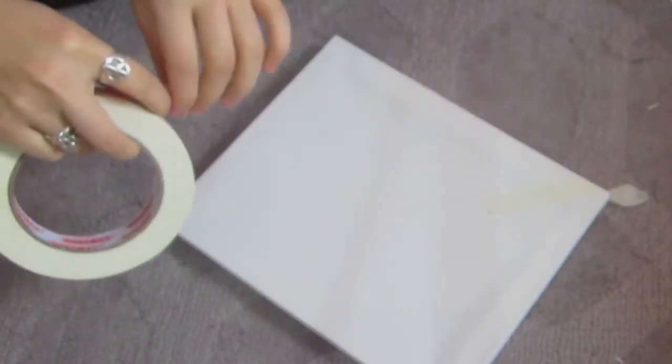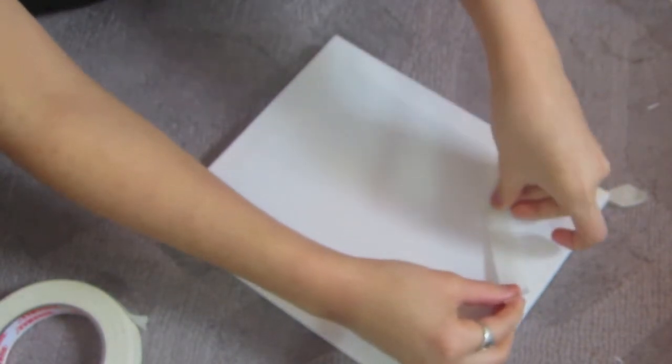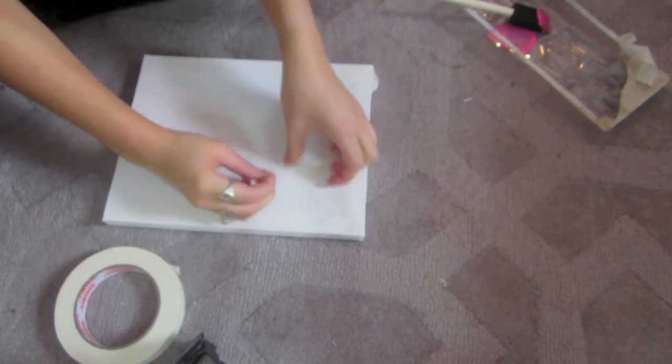For the matching chevron piece, you will want to use the masking tape to make a triangle formation all along the canvas.